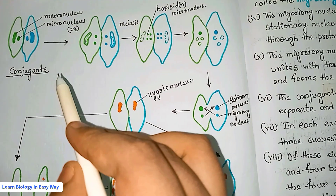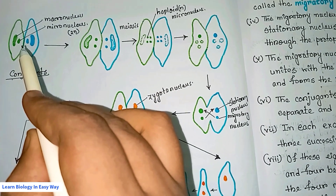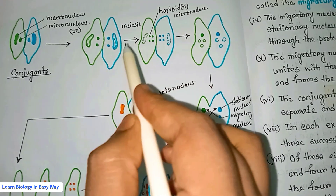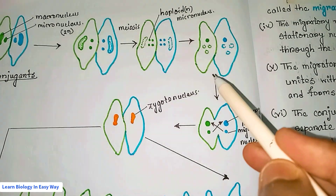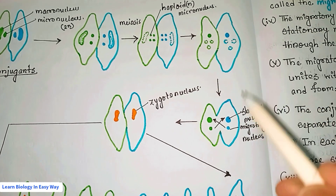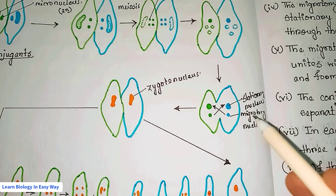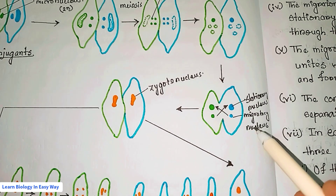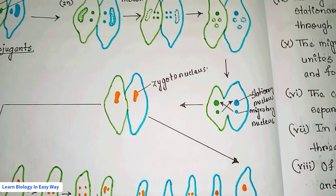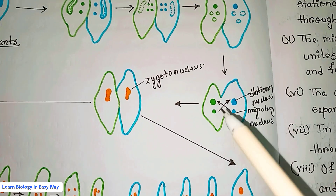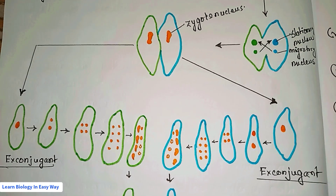In this figure, we can see two individual paramecia come close together and paired by the ventral surface. This is the macronucleus and this is the micronucleus. The micronucleus undergoes meiotic division forming four haploid micronuclei. Three micronuclei degenerate and the remaining one undergoes unequal division forming two gamete nuclei. One gamete nucleus is large — the stationary nucleus — and one is small — the migratory nucleus. The migratory nucleus of one individual goes to the stationary nucleus of the other, uniting to form the zygote nucleus. The conjugants then separate and are called ex-conjugants.